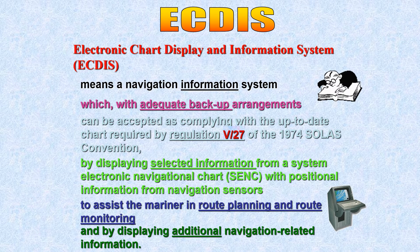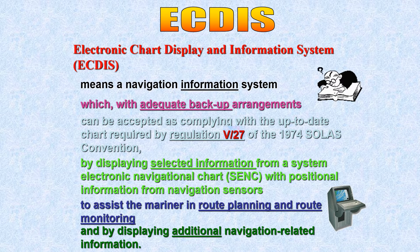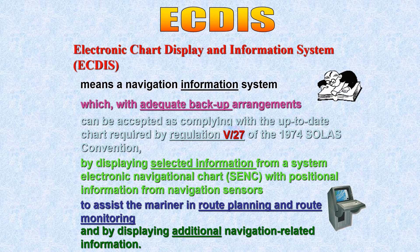SOLAS Chapter 5 regulation doesn't define ECDIS but requires compliance with up-to-date charts. The charts carried on ECDIS are ENC — Electronic Navigation Charts — and they should be corrected, just like paper charts. ECDIS should display selected information from the SENC. The word 'selected' is important — it is based on what you as the user choose to display. If you don't understand ECDIS well, you may not display the correct information.